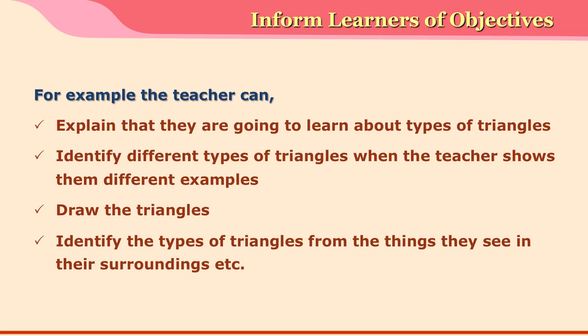The teacher need not necessarily read out the learning objectives, because especially for very young learners it will not make much sense. But the teacher can do different activities which still inform them of the objectives — for example, explaining that they are going to learn about types of triangles, identify different types of triangles when shown examples, draw triangles, or identify types of triangles from things they see in their surroundings. If the teacher explains these things, learners will know what to expect from the class.